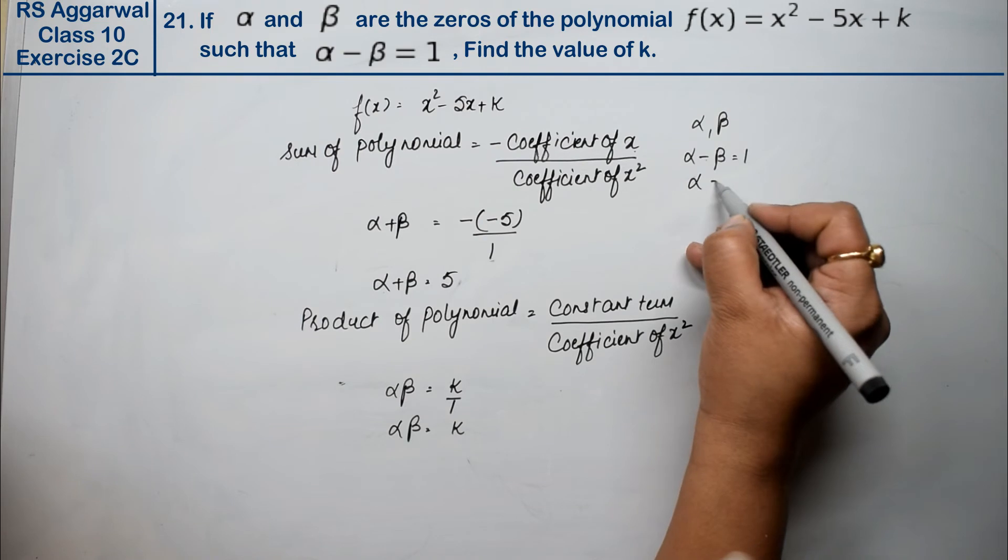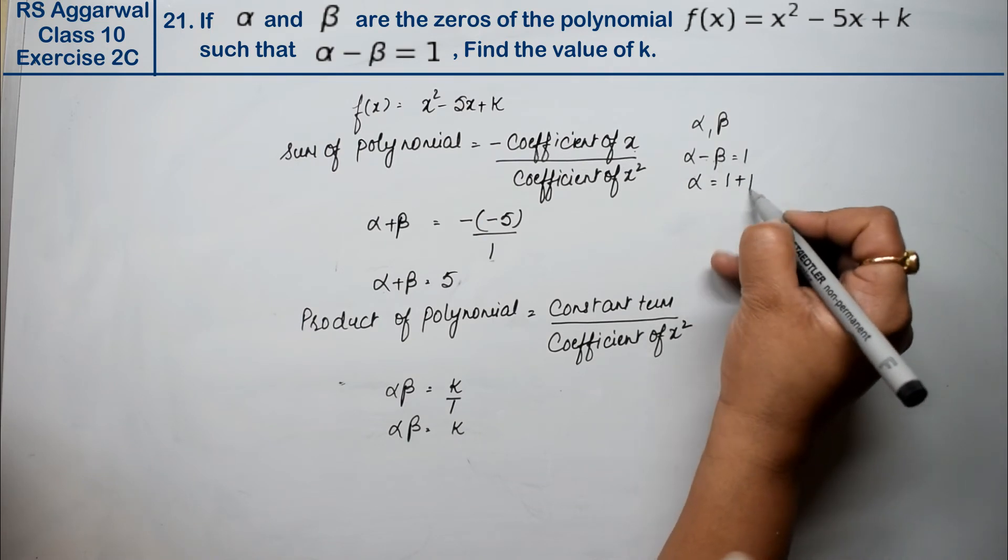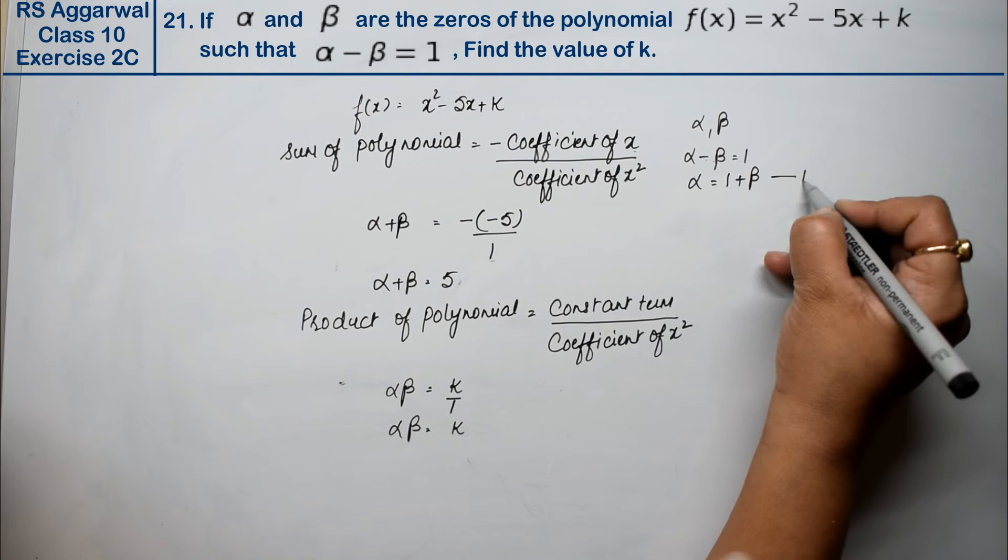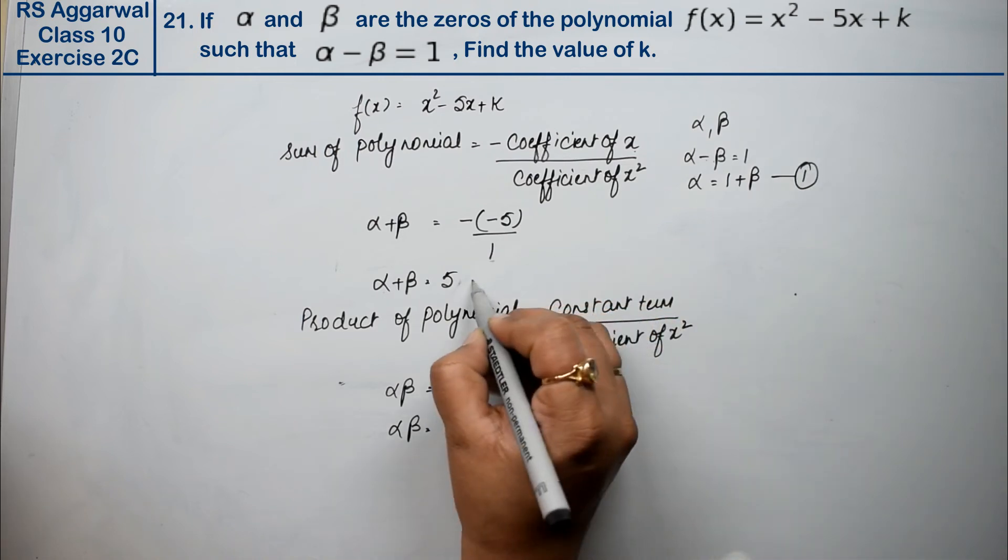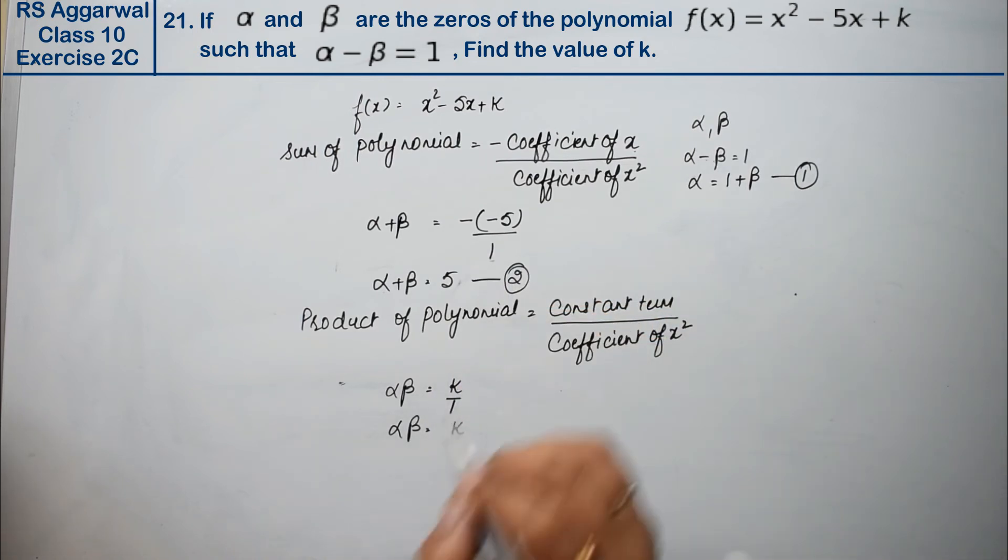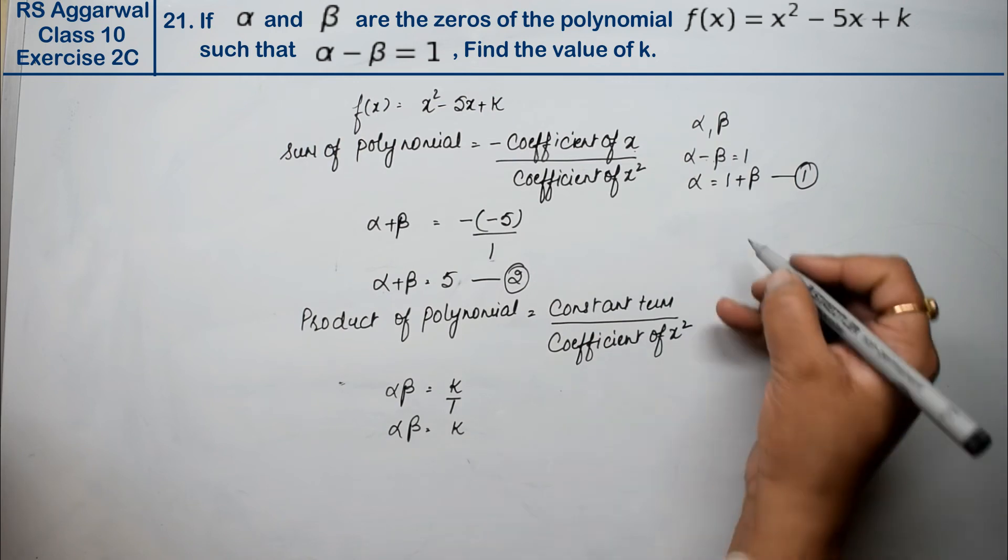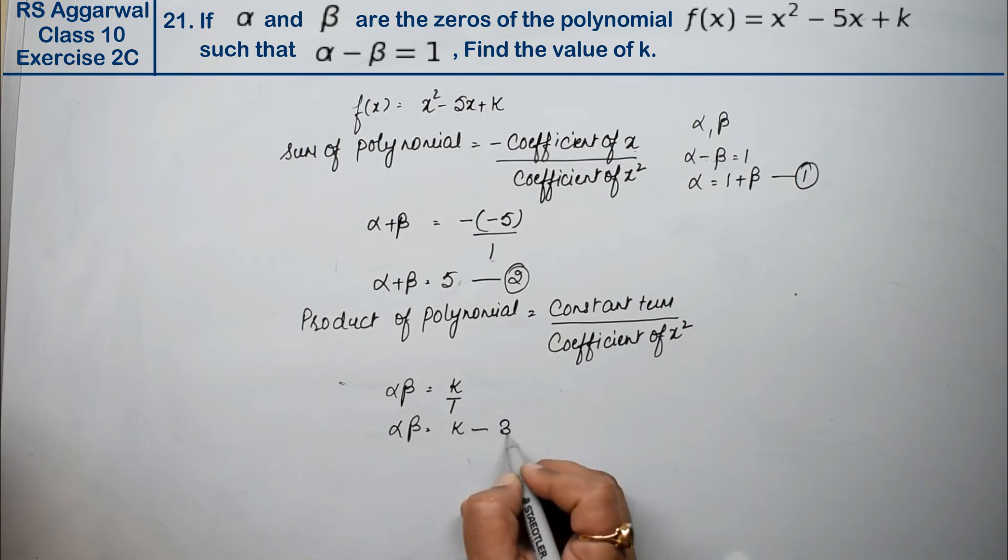Now we can find the alpha value from here. We get α = 1 + β. This is our first equation, this is the second equation, and we'll find α and β values from these. This is the third equation.